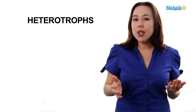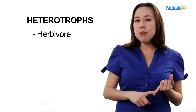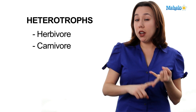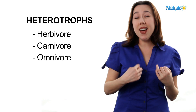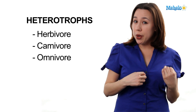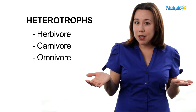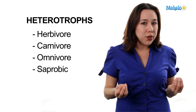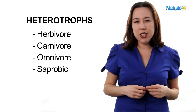Now heterotrophs generally fall into one of four categories. You're either going to be an herbivore, which means you eat plants; a carnivore, which means you eat only meat; an omnivore, like us, which means you eat plants and animals; or saprobic, which means you absorb your nutrition from the environment, like fungi.